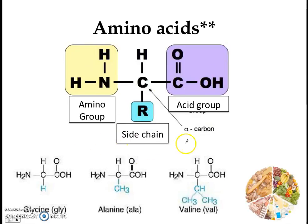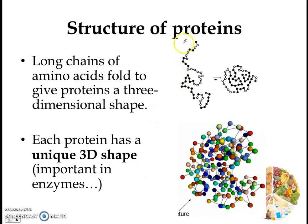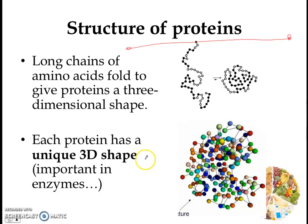This is not super important in the syllabus, but what you do need to know is that a protein is made out of many amino acids joined together. Furthermore, proteins are not just a straight chain of amino acids. Each chain of amino acids actually folds together in a very special way so that proteins have a three-dimensional shape — every protein has a unique three-dimensional structure and shape.